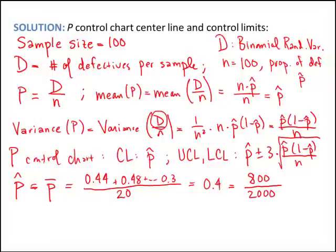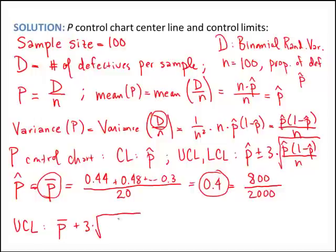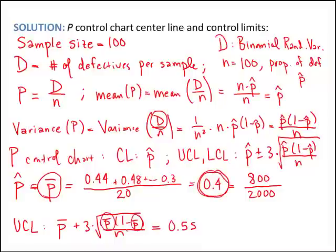The center line of the p chart is p-bar, which equals 0.4. The upper control limit is p-bar plus 3 times the square root of p-bar times (1 minus p-bar) divided by n. Substituting p-bar equals 0.4 and n equals 100, the UCL works out to 0.55. The lower control limit uses subtraction and gives 0.25 when substituting the same values.